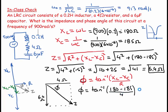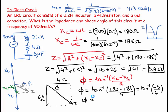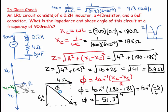That gives inverse tangent of minus 5 over 4, which equals minus 51.3 degrees. The negative sign means the phase angle is below the resistance axis — on the capacitive side.